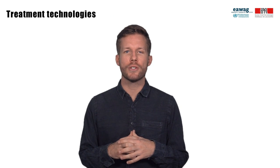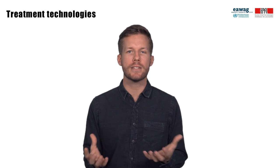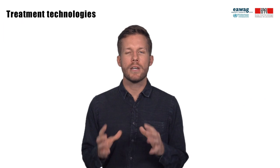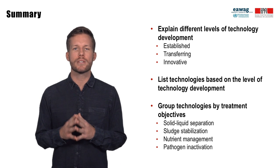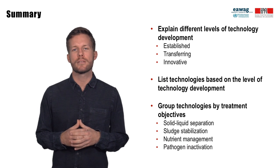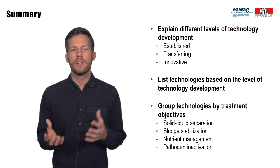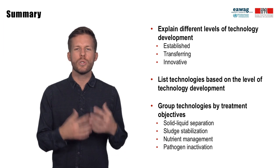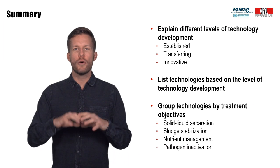You now have a good overview of treatment technologies for fecal sludge, but remember, technology is only part of the solution. Next to the level of technology development and treatment objectives presented in this module, considerations like capital, operation and maintenance cost, existing institutional arrangements and capacity, the enabling environment, and socio-economic characteristics need to be considered and will be discussed in separate modules. Technologies have different levels of development based on existing knowledge from research, design, and operation and maintenance — this should be considered when selecting treatment technologies. Knowing the treatment objectives, such as solid-liquid separation for an unplanted drying bed, or sludge stabilization, nutrient management, and pathogen inactivation for co-composting, is important to select and combine technologies for a complete fecal sludge treatment plant.